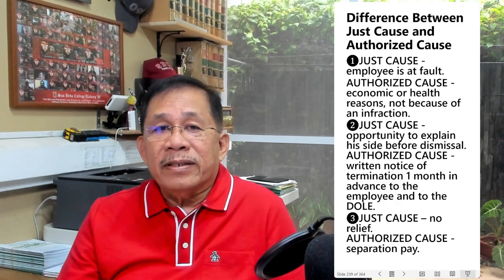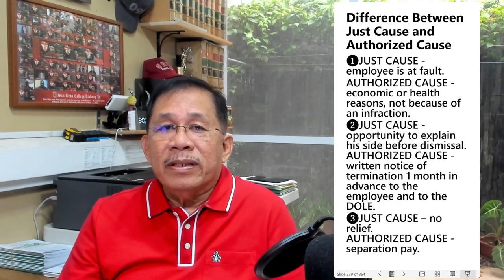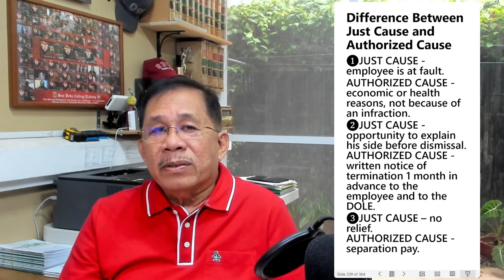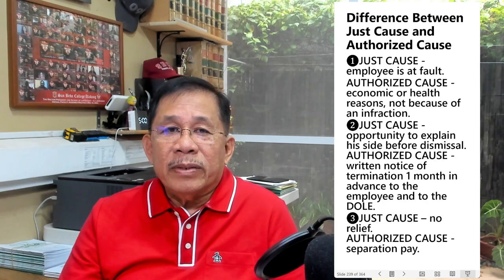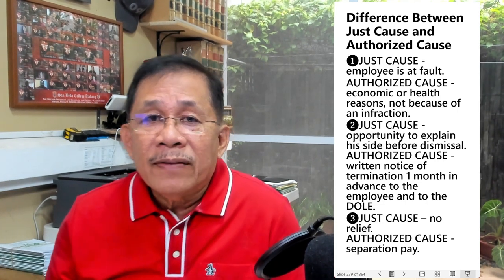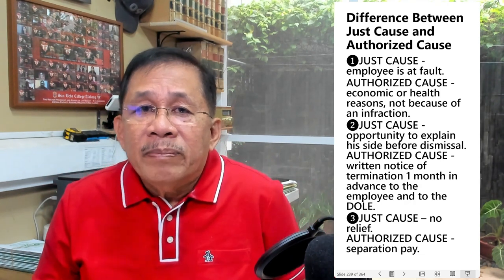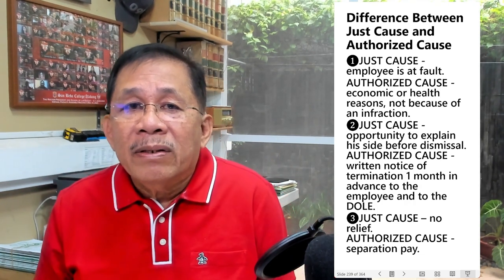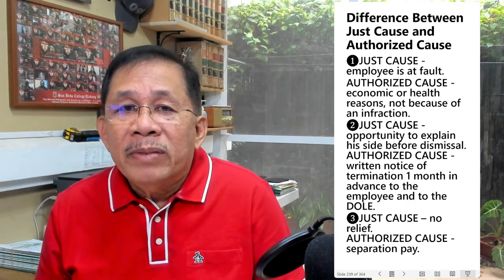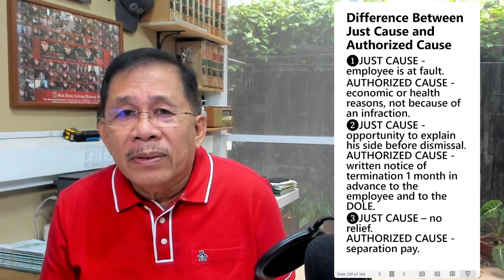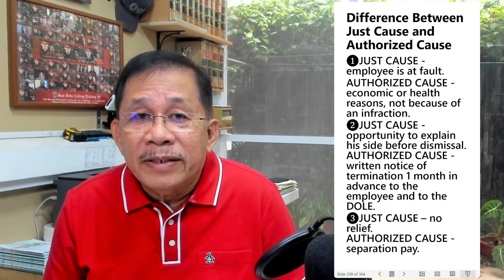What is the difference between a just cause and authorized cause? First, in dismissal for just cause, the employment is terminated because the employee is at fault. But in dismissal for authorized cause, the employment is terminated mainly because of economic reasons, and not because of a fault or infraction on the part of the employee.